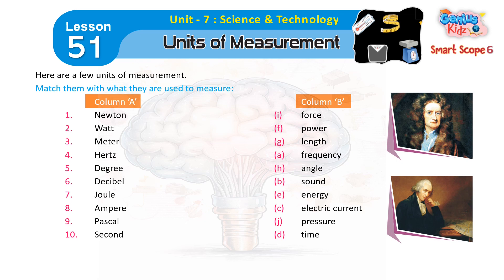6. Decibel (B) - Sound. 7. Joule (E) - Energy. 8. Ampere (C) - Electric Current. 9. Pascal (J) - Pressure. 10. Second (D) - Time.